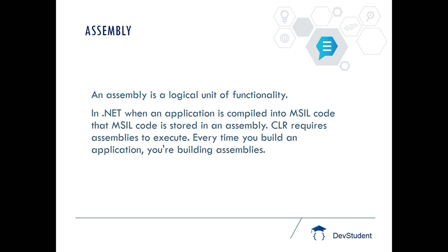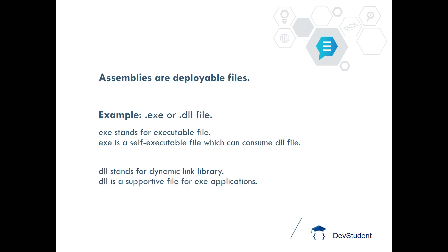CLR requires assemblies to execute. Every time when you build an application you are going to build an assembly, which can be a .exe or .dll. So assemblies are also known as deployable files — for example, .exe or .dll are known as assemblies and which are deployable files.